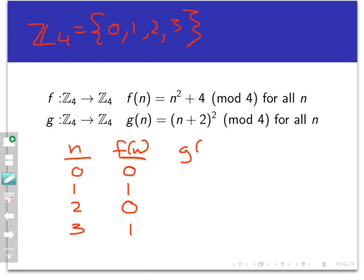Now, check out what happens when I use g of n. Again, we really, really know, because we're smart people, that n squared plus 4 is not always equal to n plus 2 squared. Foil method and all that. But watch what happens when I reduce mod 4. If I put in 0 for g, I have 0 plus 2, 2 squared is 4, and that mod 4 is 0. If I put in n equals 1 for g, I have 1 plus 2, that's 3, and I square that and get 9, and 9 mod 4 is 1.